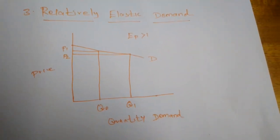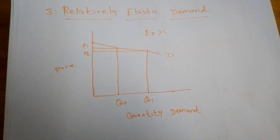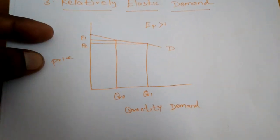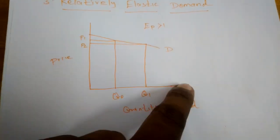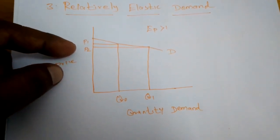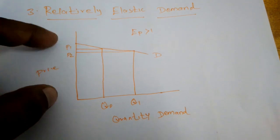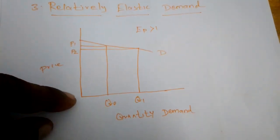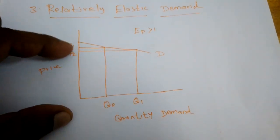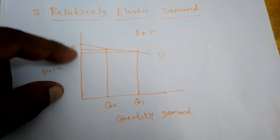Next is relatively elastic demand. The demand is relatively elastic when the proportionate change in demand for a commodity is greater than the proportionate change in its price. So when the price changes by just one or two rupees, the quantity demanded increases by more than the relative change in price. When price is at OP1 and quantity is OQ0, if price decreases to OP2, the quantity demanded increases by more than the rate of price decrease.